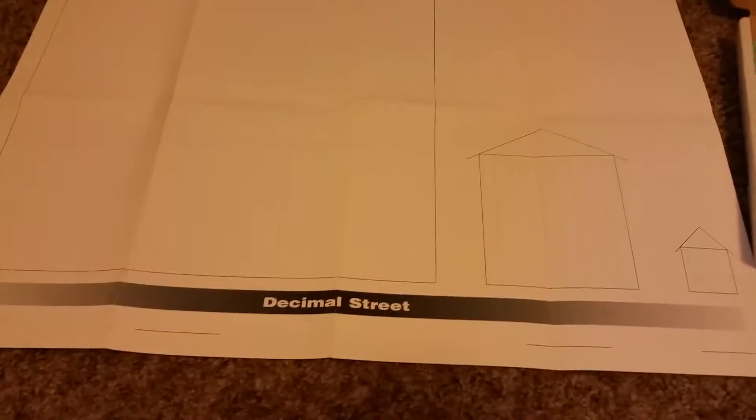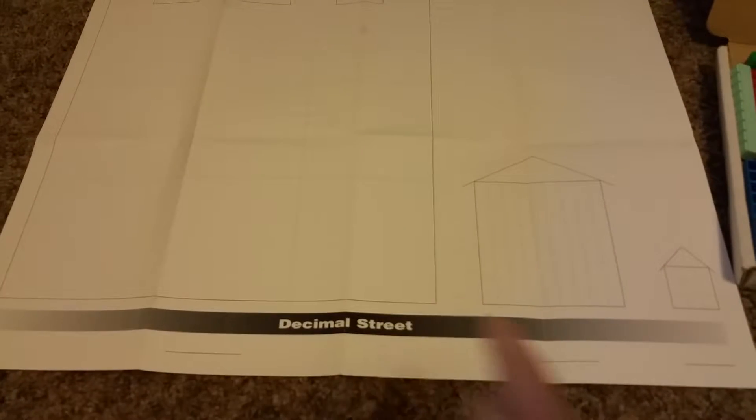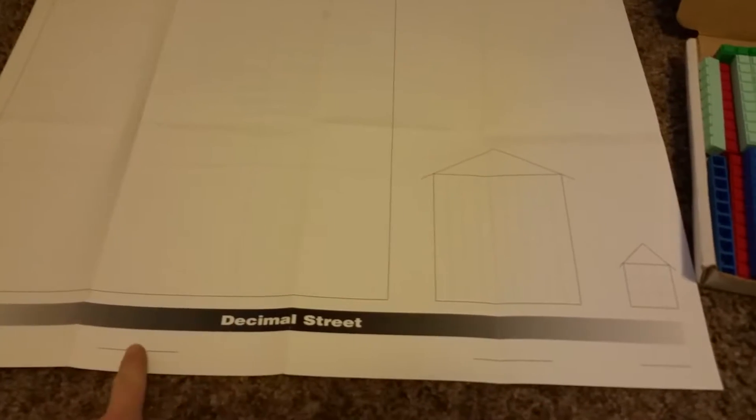So this is what they give you in the beginning. It's called Decimal Street and he explains it all. But it's where the hundreds, tens and ones live. And it helps them learn the place value. So it's kind of fun.